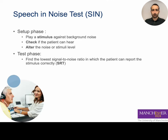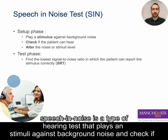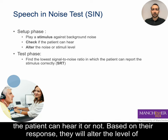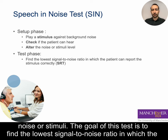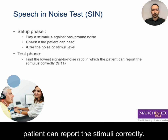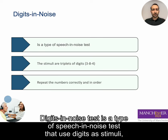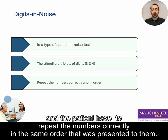Speech-in-noise is a type of hearing test that plays stimuli against background noise and checks if the patient can hear it based on their response, altering the level of noise or stimuli to find the lowest signal-to-noise ratio at which the patient can report the stimulus correctly. A digit noise test is a type of speech-in-noise test that uses digits as stimuli, and the patient has to repeat the numbers correctly in the same order they were presented.